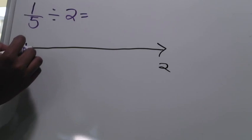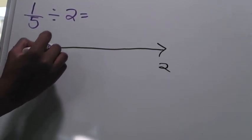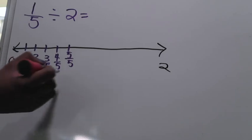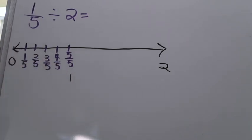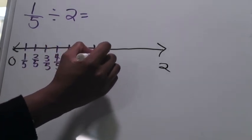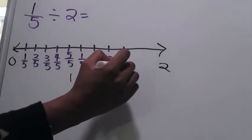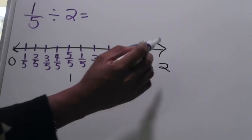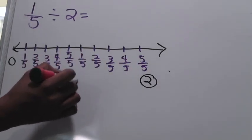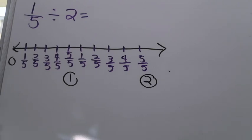I draw out the number line starting at zero. I mark one-fifth, two-fifths, three-fifths, four-fifths, and five-fifths, which represents one whole, so I label it one. Then I continue: one-fifth, two-fifths, three-fifths, four-fifths, and five-fifths, ending at two. My number line has now started at zero, ended at two, and is divided into fifths, matching the structure of the problem.